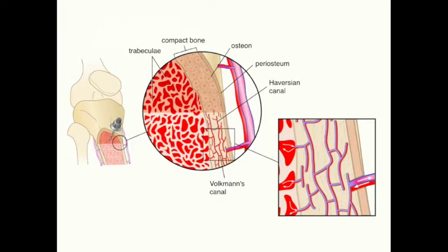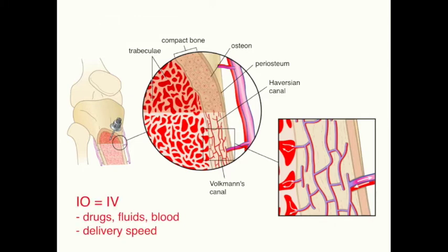Now that we have determined that IO access is useful and highly recommended, let's take a closer look at what it actually is. Taking the tibia as an example, this is a long bone comprising an outer layer of hard compact bone and a central space of spongy bone, which is rich in bone marrow and extremely well perfused. This area of bone can be viewed as a vein that never collapses, meaning it is available even in the state of shock. Furthermore, it is very well perfused and has excellent connections to systemic circulation. For these reasons, IO access is equivalent to IV access in terms of functionality and drug delivery.